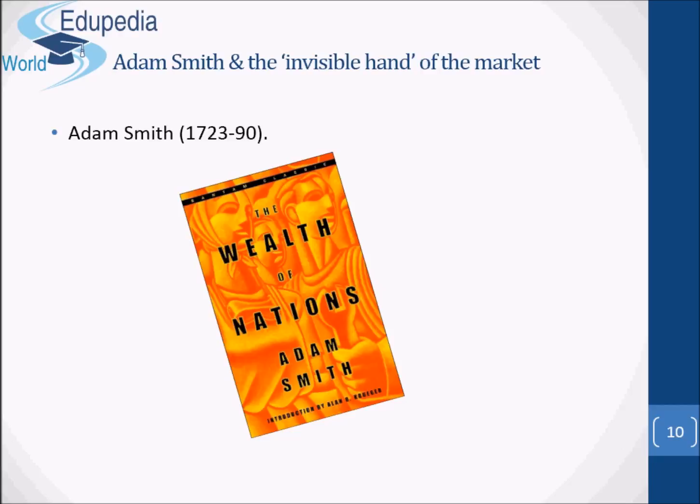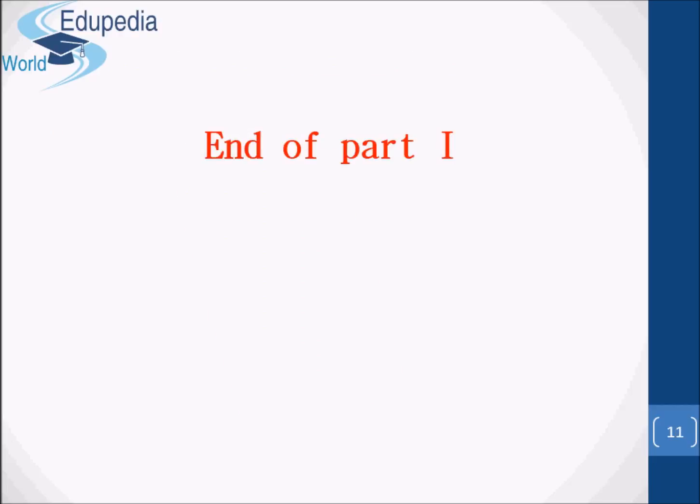'A monopoly granted either to an individual or to a trading company has the same effect as a secret in trade or manufactures. The monopolists, by keeping the market constantly understocked, by never fully supplying the effectual demand, sell their commodities much above the natural price and raise their emoluments, whether they consist in wages or profit, greatly above their natural rate.' Later on, he looks at the dangers of firms getting together to pursue their mutual interest: 'People of the same trade seldom meet together, even for merriment or diversion, but the conversation ends in a conspiracy against the public or in some contrivance to raise prices.'